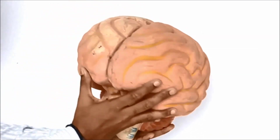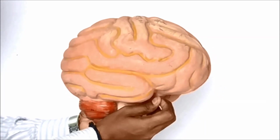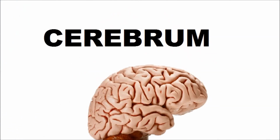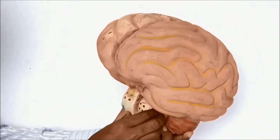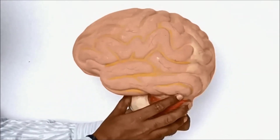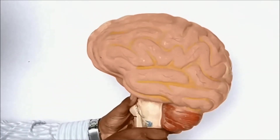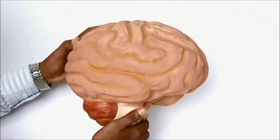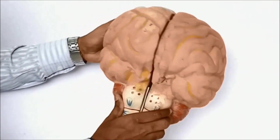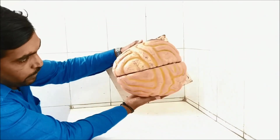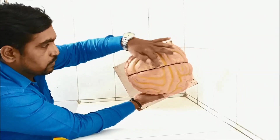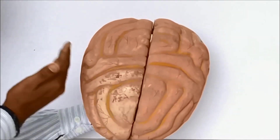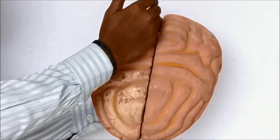The cerebrum is the largest part of the brain, making up 80 to 85 percent of the total brain. It is divided into two hemispheres. Cerebrum is not a single unit — it is divided into two halves by a vertical median line called the longitudinal groove or longitudinal fissure.